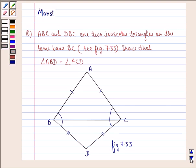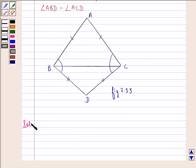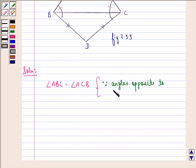Let us start with the solution to this question. We see that angle ABC is equal to angle ACB, that means this angle is equal to this angle, because angles opposite to equal sides are equal.